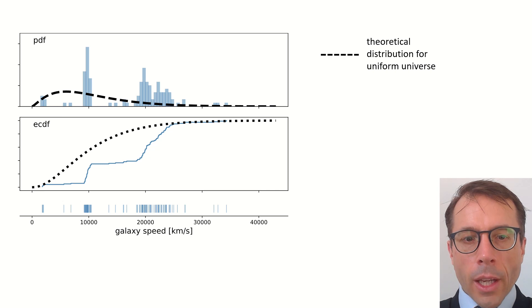Anyway, here is the PDF of the theoretical distribution for a uniform universe in the top plot, and here is its CDF in the bottom plot. Both of them show us it's a bad fit.